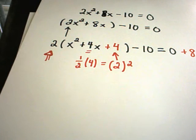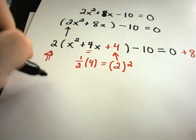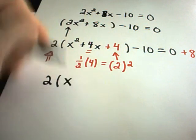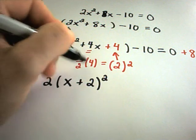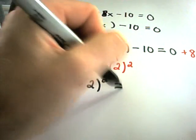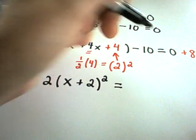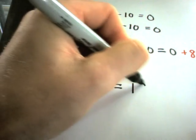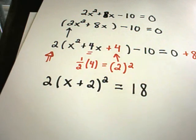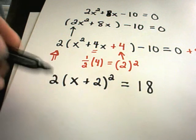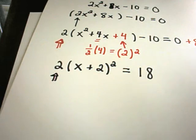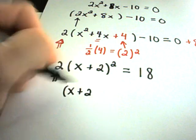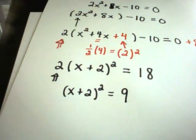Inside the parentheses, x squared plus 4x plus 4 factors as x plus 2 squared — notice that one half of 4 is 2. Now combining the constants: 0 plus 8 gives 8 on the right, and adding the 10 over gives 18. So we have 2 times x plus 2 squared equals 18. Dividing both sides by 2 gives x plus 2 quantity squared equals 9.